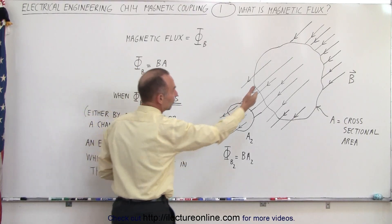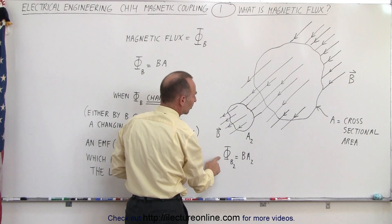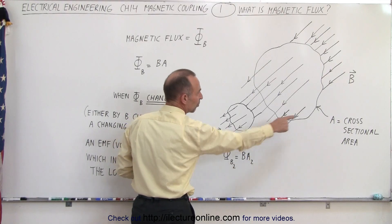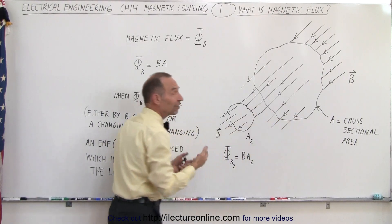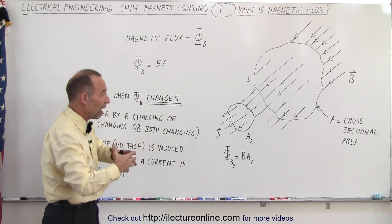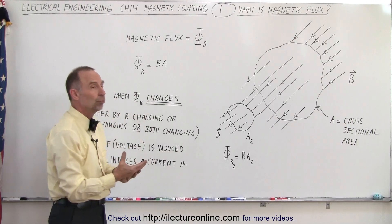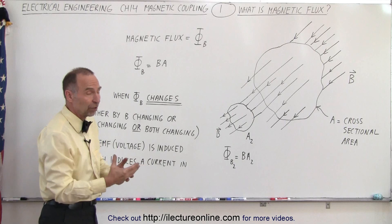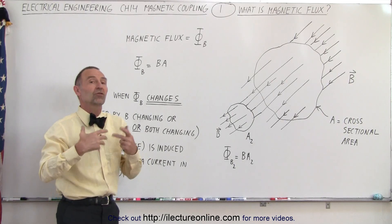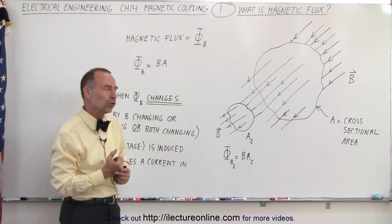We can have the very same magnetic field with a much smaller loop, and the magnetic flux would be much smaller simply because the area is smaller, even though we have the same strength field. The magnetic flux is simply a function of how strong the magnetic field is and how big the loop is. Make the loop twice as big and we have twice as much flux; three times as big, three times as much flux. Double the magnetic field strength and we have twice the flux — it's the product of the two.